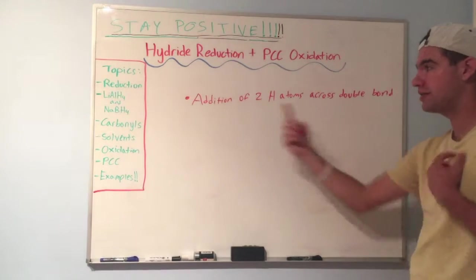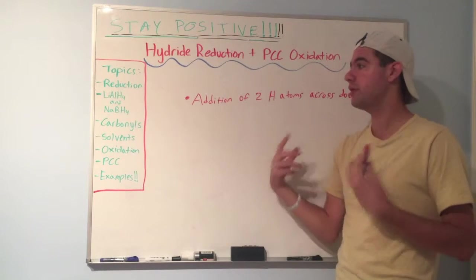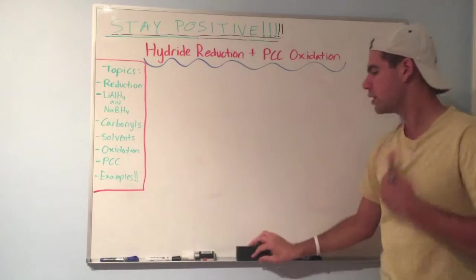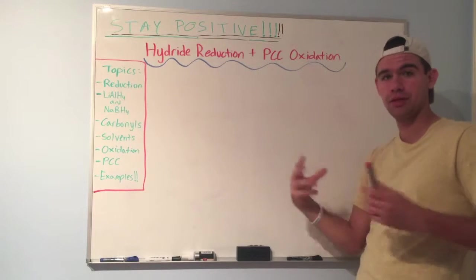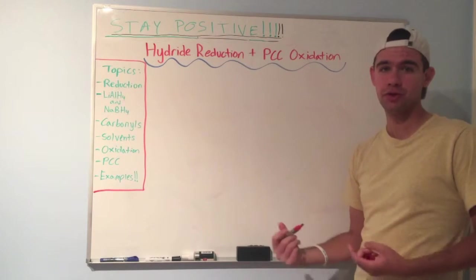So there are many examples of this, but we're going to tackle two primary sources of reduction. So what's one really good way to add hydrogens across a double bond? Well, you need a hydrogen atom that can act as a nucleophile.